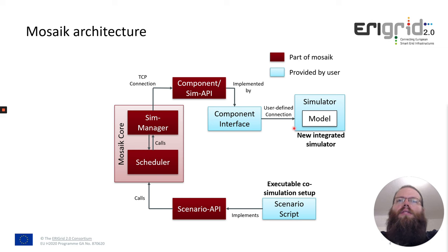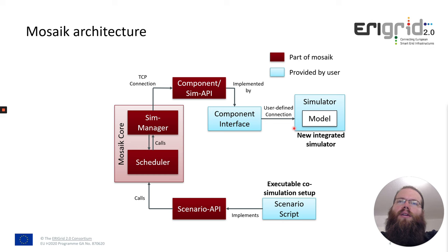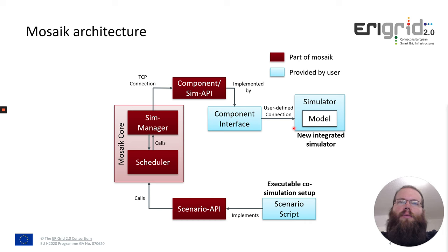In Mosaic we call the implementation the simulator, and within the simulator there is then the model. This model contains the calculation which should happen and all the information about a component. The idea is that you can easily instantiate multiple instances of this model. For example, when you have a PV model you might want to instantiate 20 instances — the same model but parametrized differently — and place them in an electricity grid for your simulation.